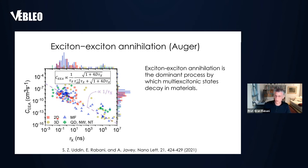We have here two-dimensional structures, three-dimensional quantum dots, nanowires, etc. The key here is this linear correlation between the exciton-exciton-annihilation coefficient and the radiative lifetime tau_x, described in detail in this paper, and it's not the subject of this work.